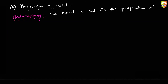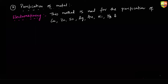Electro refining is used for the purification of copper, zinc, tin, silver, gold, nickel, lead, and aluminium. For all these metals we use the electro refining process. It is based on the concept of electrochemistry.